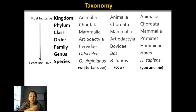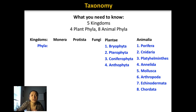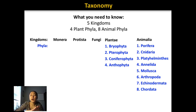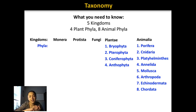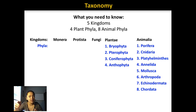Let's look at the taxonomic groups you should be familiar with. You need to know five kingdoms: Monera, Protista, Fungi, Plantae, and Animalia. There are four phyla within plants that you should know — memorize those phyla and what type of organisms belong in each one. There are also eight animal phyla that you should memorize. Remember, on the exam spelling doesn't count, but you want to be as close as possible because if we can't sound it out, you're probably not going to get the points for it.